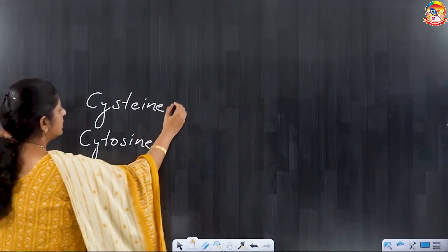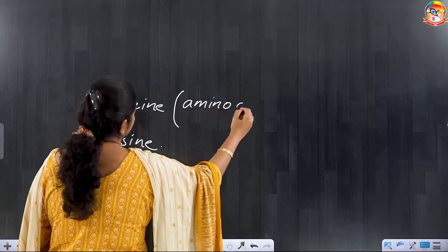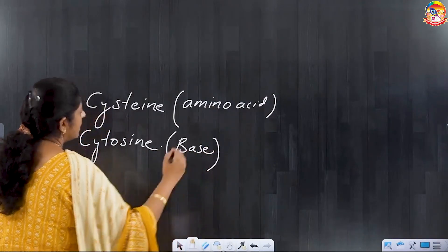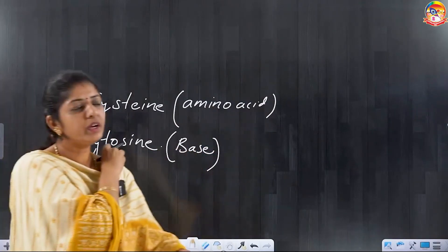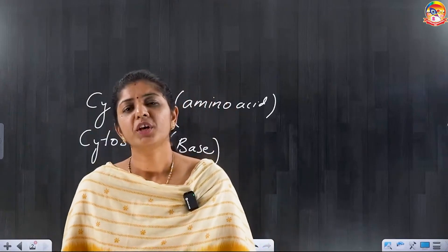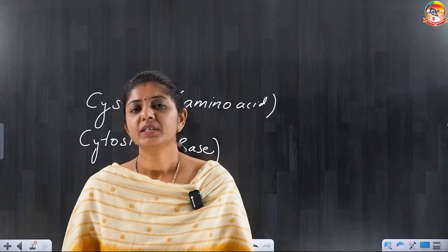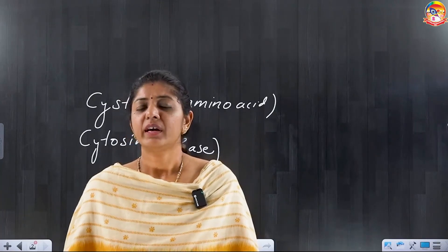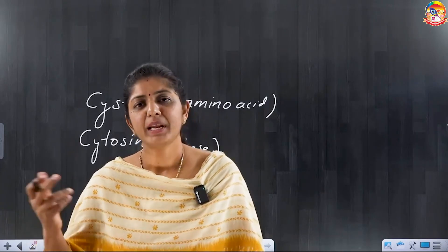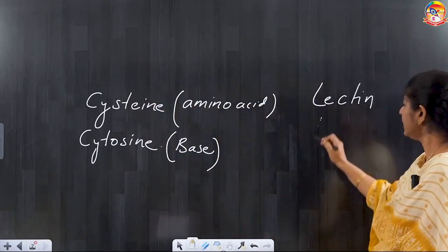Let me give you one more example here. Like if I am writing the word cysteine, next word is cytosine. Cysteine is what? This is the amino acid. And cytosine again is a base. So it's very important to read the questions very carefully with their options first of all.